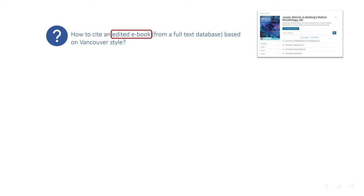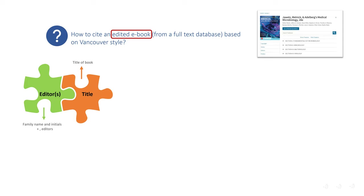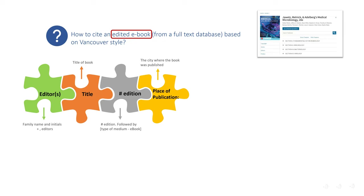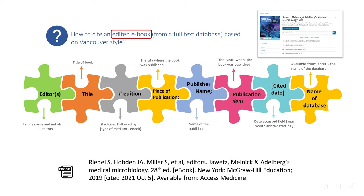To cite this e-book in Vancouver referencing style, refer to the format for citing an edited electronic book from a full-text database. First, put editors' family name and initials, listing all editors in order they appear — if there are multiple editors, list the first three. Next, put the title of the book, then the edition number, followed by square bracket [ebook]. Next, provide the place of publication, publisher name, and year of publication, then the date the citation was created, and finally the name of the database where the e-book was retrieved from — in this example, Access Medicine.